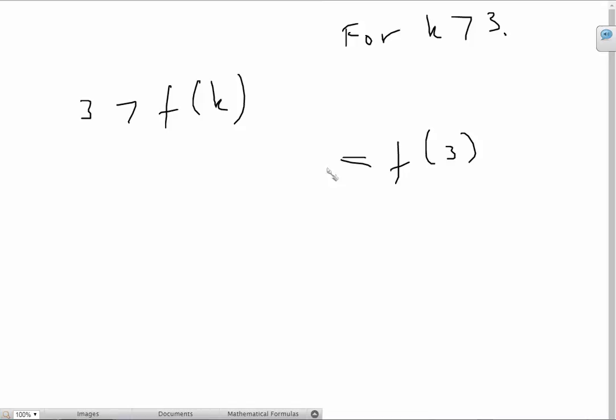So essentially, what we can do here because f of k is a decreasing function, we can simply put k as 4 inside because the maximum value of f of k is going to be f of 4, right? And after that, if we put any other value then that value is going to be less than f of 4. So let's just do that.